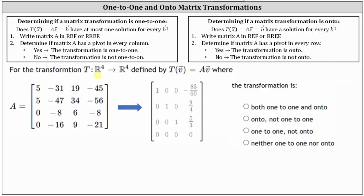For the transformation T from R4 to R4, defined by T of vector V equals matrix A times vector V, where matrix A is given, we want to determine if the transformation is both one-to-one and onto, onto not one-to-one, one-to-one not onto, or neither one-to-one nor onto.